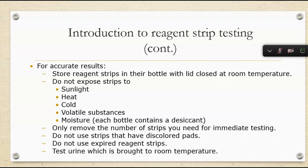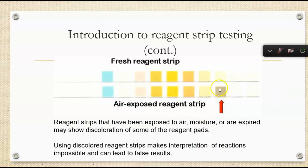A lot of these are enzymatic reactions, and enzymatic reactions are directly impacted by changes in temperature and changes in pH. Enzymes are a lot slower when they're cold, so you may get some false results because of that. This is an example of that brownish color — the air-exposed reagent strip. You want to always check that, and sometimes we can see discoloration of expired strips as well.